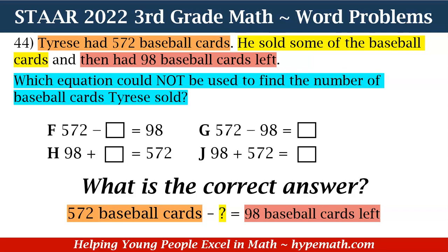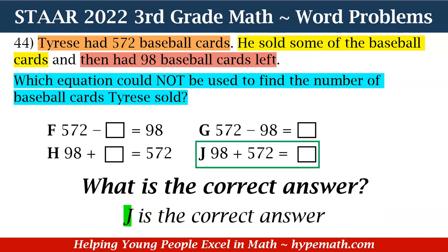Let's look at J: 98 plus 572 equals a square. If we added 98 plus 572, that would actually be more than the baseball cards Tyrese had. He started with 572 and sold some, so the number he has left is actually less than 572 — he only had 98 baseball cards left. Since J cannot be the equation we can use, that is the correct answer.